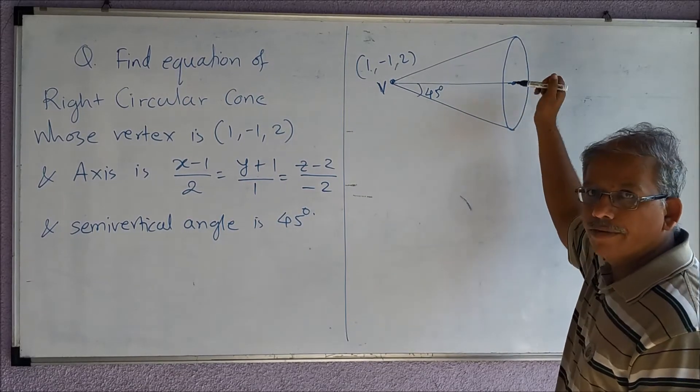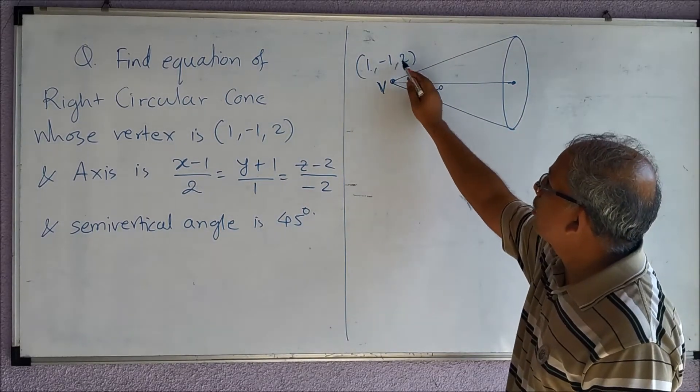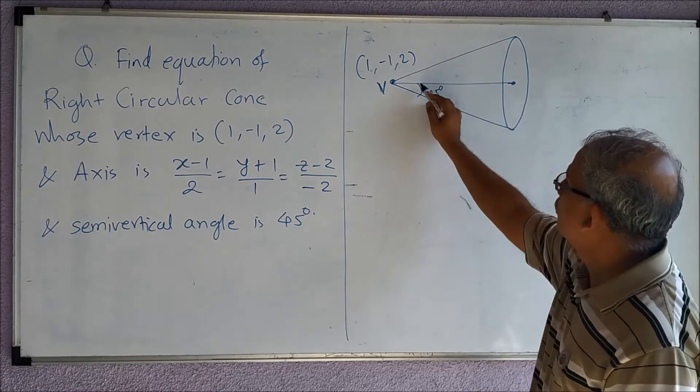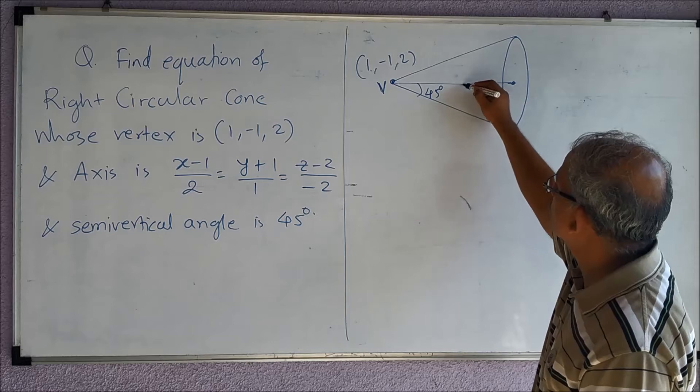So everything is given here, right? If you consider this cone like this, the base is circular, the vertex is (1, -1, 2), semi-vertical angle is given, and the equation of axis is also given to me.